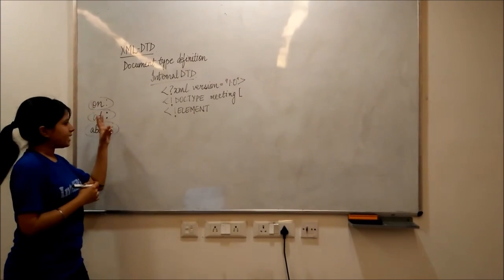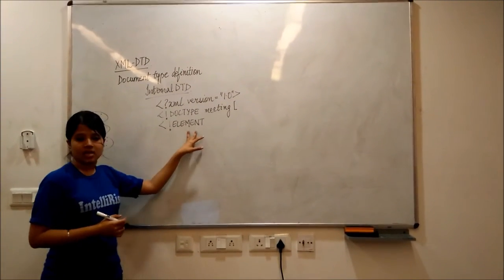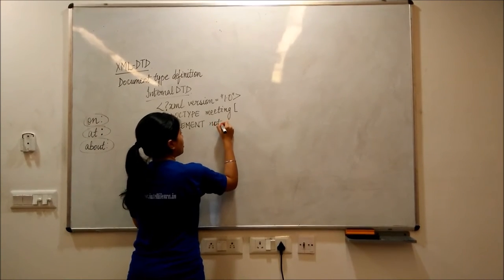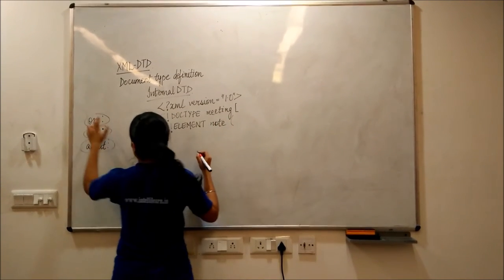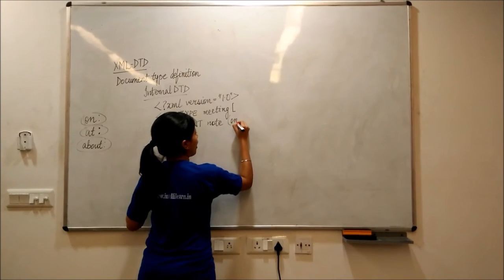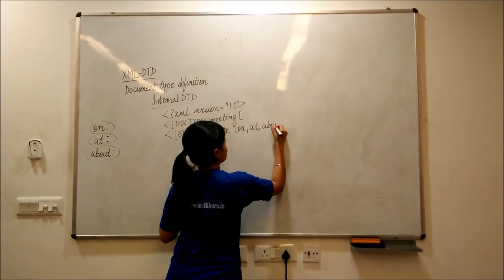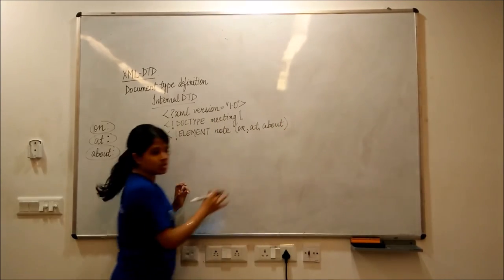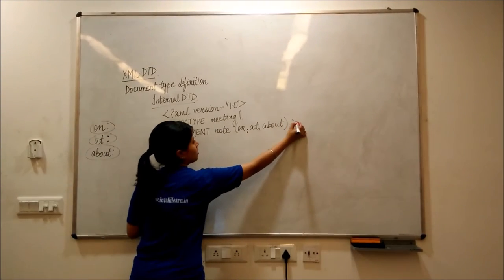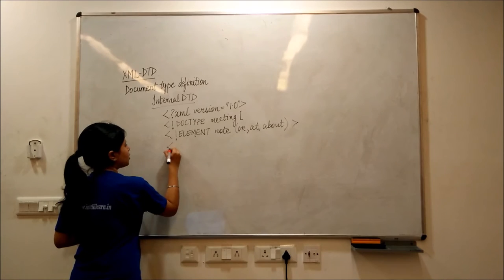So, element note, are three agendas: on, at, about. Close this. So, I will record this. Then, first, we will start with element,